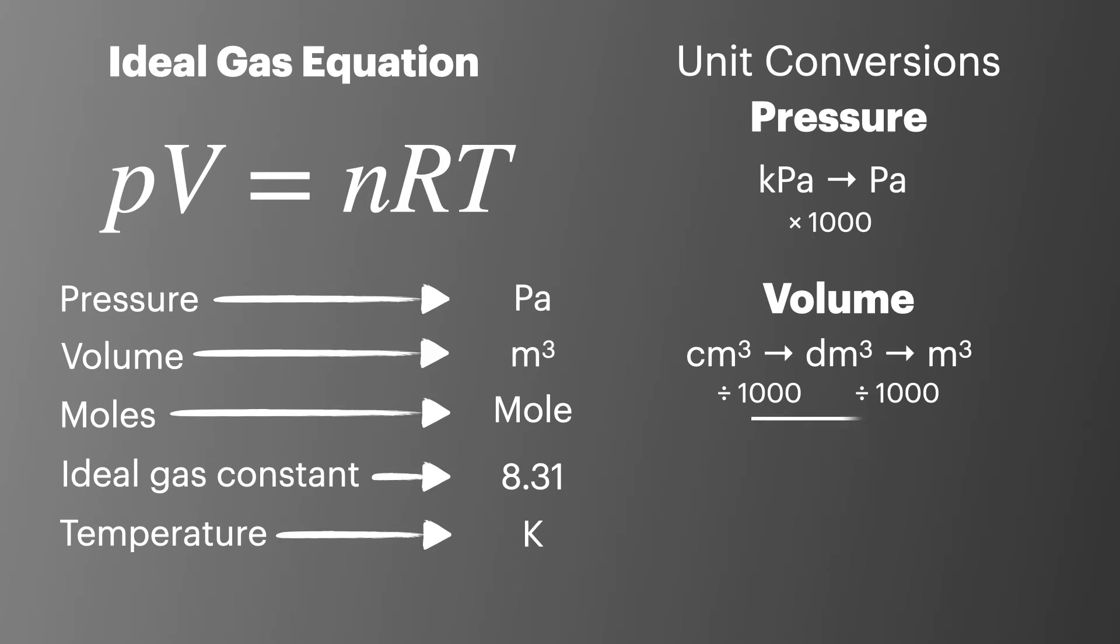Or if you prefer, go directly and divide by 10 to the power of 6. And finally, for temperature, which must always be in kelvin, we often have to convert from degrees Celsius to kelvin, and to do that we add 273.